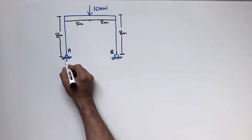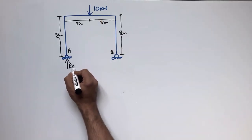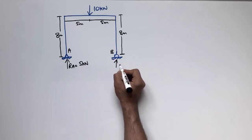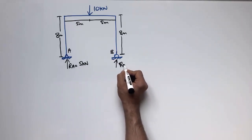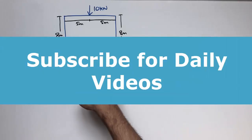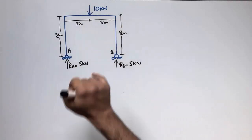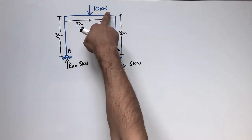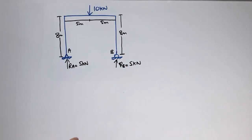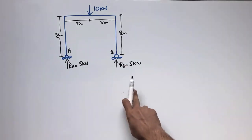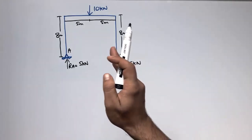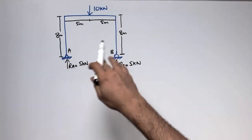Since the load is at the center, 5kN is taken by one support and 5kN by the other. The total resistance equals the total applied load: 10kN equals 5 plus 5, which is 10kN. Now, after finding the support reactions as the first step, I will show how to transfer the loads in the frame structure.